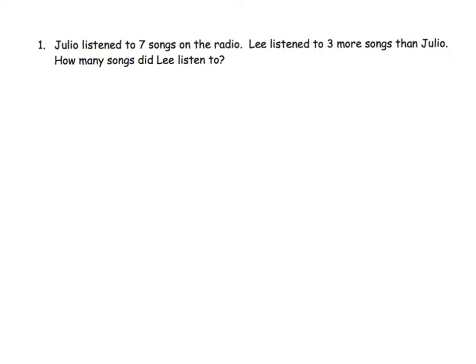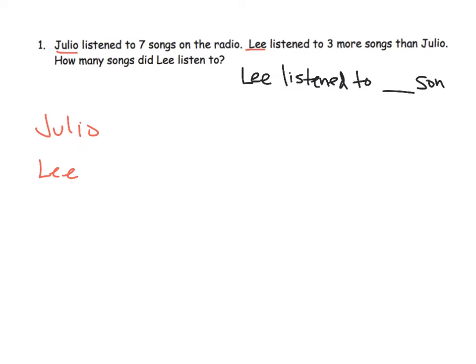It says Julio listened to seven songs on the radio. Lee listened to three more songs than Julio. How many songs did Lee listen to? So we've got two characters — Julio and Lee. I'm going to write that down. And I should write the question down too: how many songs did Lee listen to? So the answer statement is: 'Lee listened to blank songs.' That is our answer sentence with a blank — a direct response to the question.